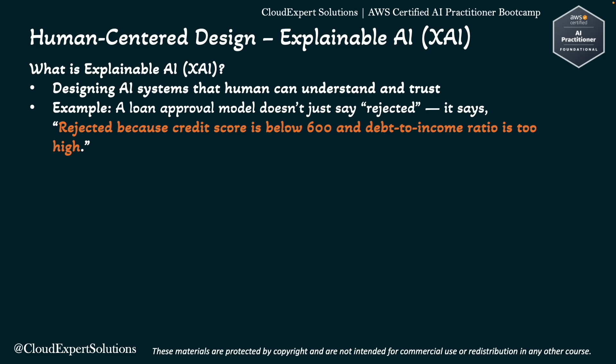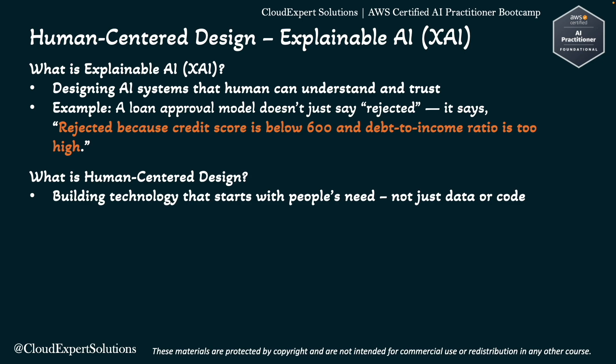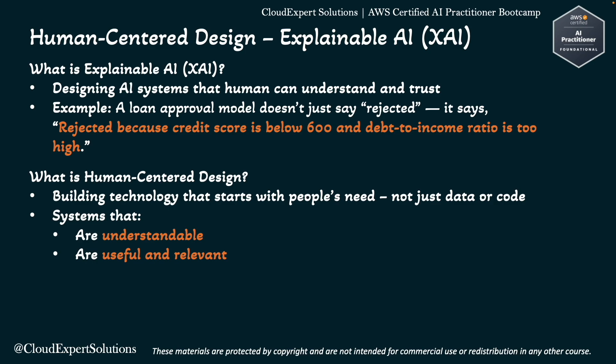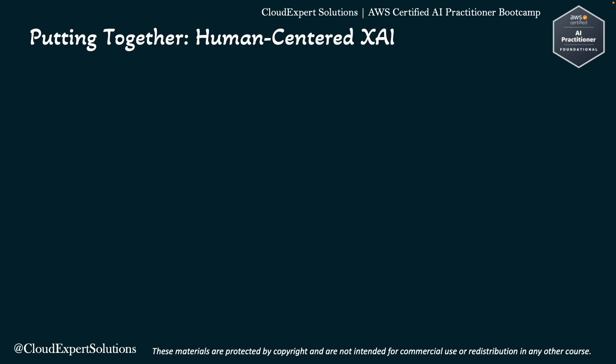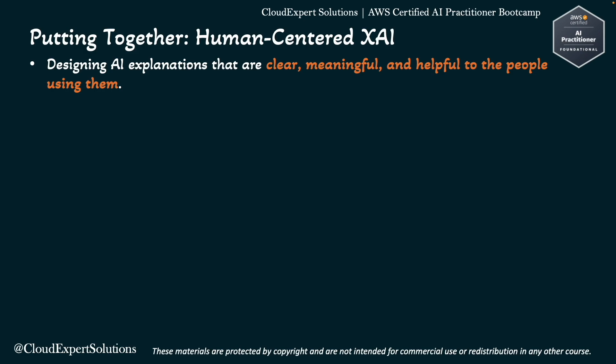Human-Centered Design or HCD means building technology that starts with people's needs, not just data or code. It's about designing systems that are understandable, useful and relevant, and help people make better decisions. When you combine both, Human-Centered Design for Explainable AI means designing AI explanations that are clear, meaningful, and helpful to the people using them.